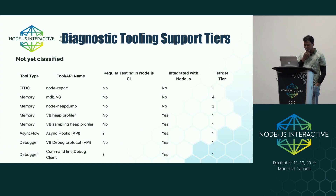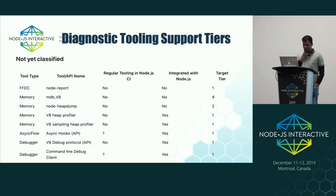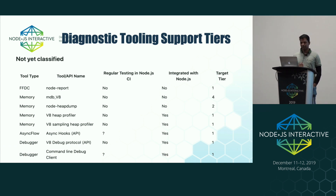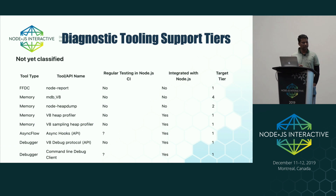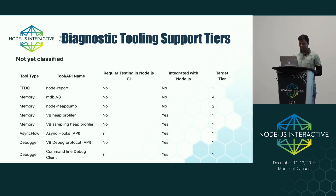There is a support tier model looking at the available tools, their existing state in the Node.js core, whether they have good CI coverage, whether they're used in production, and what target tier they are aiming for.